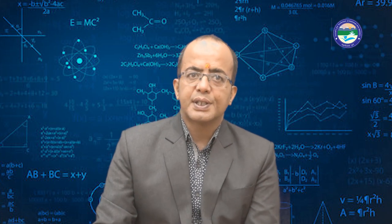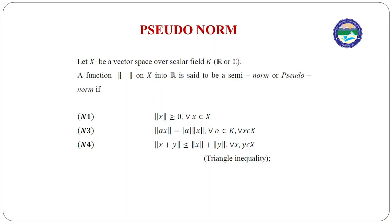Now we have a condition called a semi-norm. In a semi-norm the space will be the same as a normed space except: ‖x‖ = 0 implies x = 0, but it is not necessary that if x is any vector element, ‖x‖ = 0 implies x = 0. That is, if the second condition is not satisfied, it will be a semi-norm but not a norm. Every norm is a semi-norm, but the converse is not necessarily true.